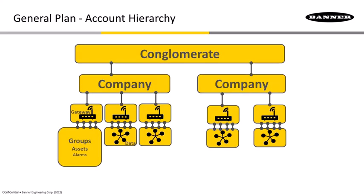It's important to understand the general account hierarchy within Banner CDS. When you first create a new account, you are entered in as a conglomerate with one company. A conglomerate is just a collection of companies, and a company is just a collection of gateways, each with their own data and registers pushing up from the various sensors attached to that gateway. When you create a user as a conglomerate user, you can see the different companies underneath. However, you might have a colleague who only needs to see one facility or one set of gateways, so you can enter them as a company user. A company level user will not have access to other companies underneath the same conglomerate.